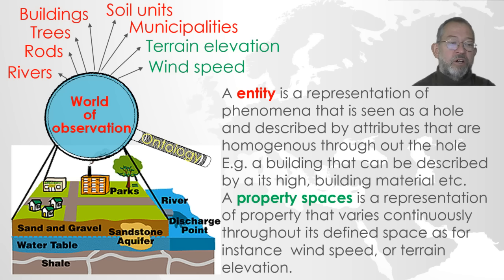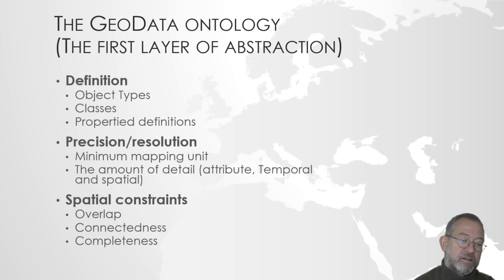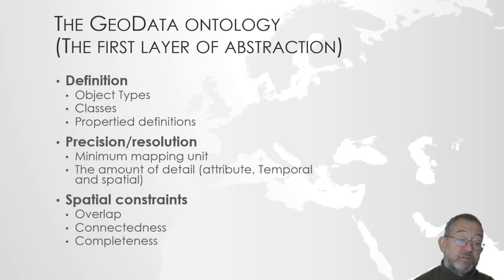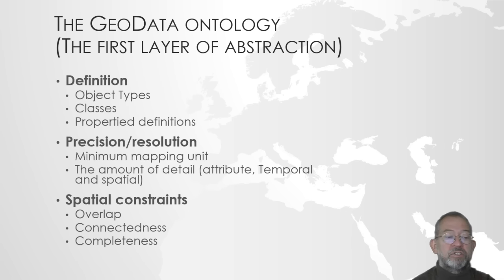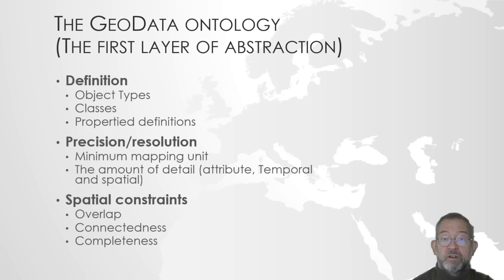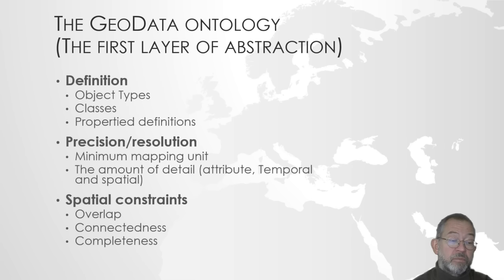The ontology of GeoData consists of three main components. First, the definitions — what is there? So, buildings and so on. They can also be classifications: soil units are not objects as such, they are the result of a classification. And we also define which properties we are interested in registering — temperature, elevation, and so on. Our ontology will also have to relate to our position or resolution of registration.